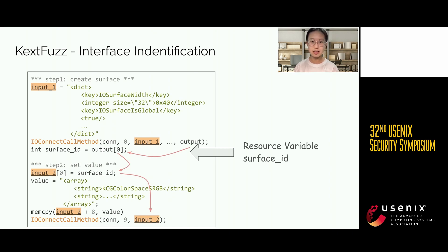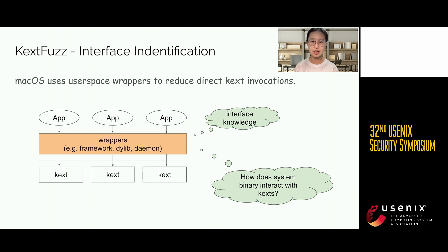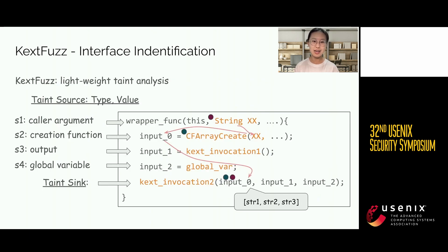Complex interface structures make it hard for the fuzzer to generate valid input. However, the wrapper binaries in MacOS provide us with extra interface information. These wrappers include system frameworks, dynamic libraries, and daemons. They are developed by Apple, which means they are calling kernel extensions in the most standard ways. KXTFuzz uses a lightweight multi-tag taint analysis method to extract knowledge from kernel extensions. It sets taint tags on taint sources and lets the taint tags spread to the kernel extension invocations. The taint sources include the arguments of interface caller functions, the return value of object creation functions, the output of kernel extension interfaces, and global variables.